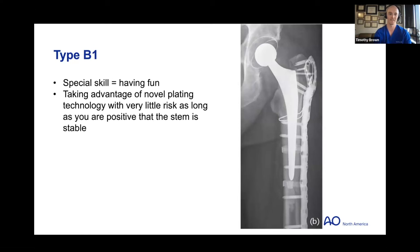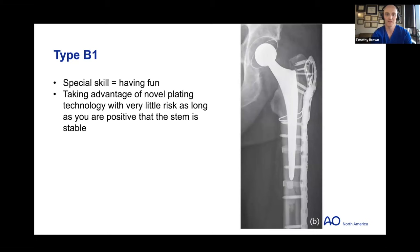For true B1 fractures, fix the problem the patient came in with. Identify that the femoral component is stable — this requires knowledge of the implant design, its track record, and the patient's history. If you're convinced you have a fracture around the bone with a stable implant, plating and stabilizing the bone is the treatment of choice.